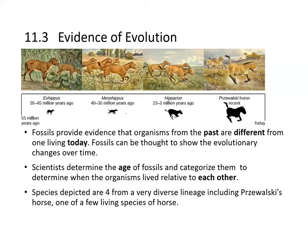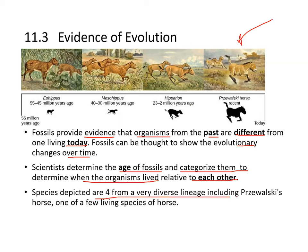Fossils provide evidence that organisms from the past are different from those living today, showing evolutionary change over time. Scientists can determine the age of fossils and categorize them to determine when organisms lived relative to each other. Species depicted include Przewalski's horse — one of the few living horse species — along with Eohippus, Mesohippus, and Parahippus, which are animals thought to have existed before leading to the modern horse.